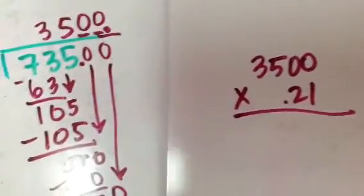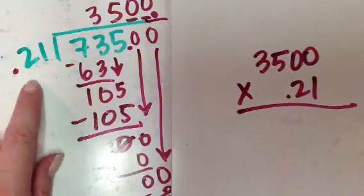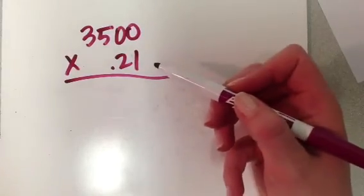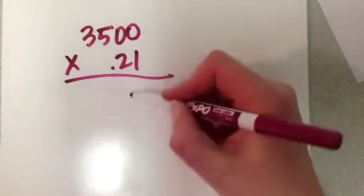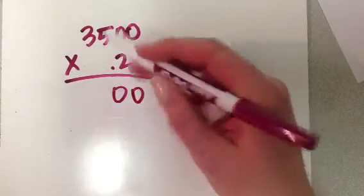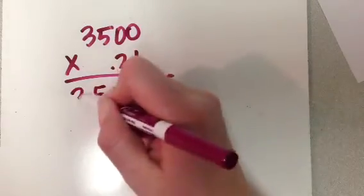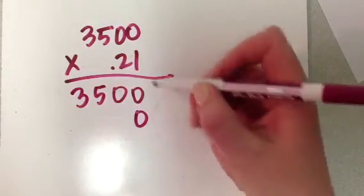3,500 times 0.21, right? Because that was my original number on the outside of the bracket over here. That was what I originally started with. So let's multiply it out and just make sure that we did this correctly and that we end up with 735.